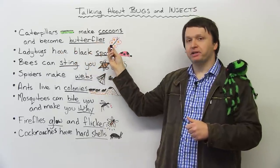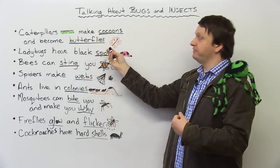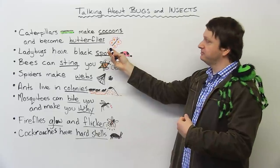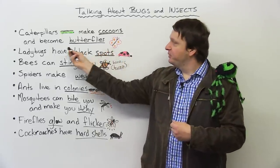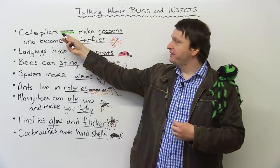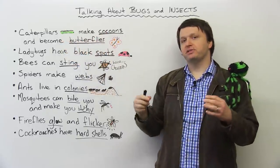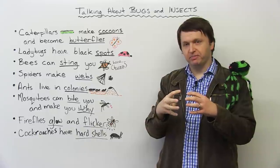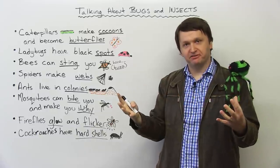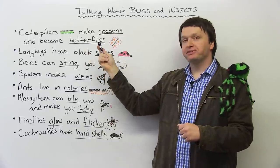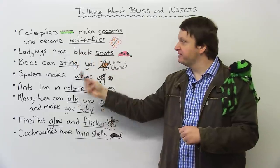So here is a picture of a butterfly. Do you like that butterfly, Steve? Yeah, it looks very nice, right? So here's a picture of a caterpillar. They make cocoons, which is the home of the caterpillar before it becomes a butterfly. So caterpillars make cocoons and become butterflies.